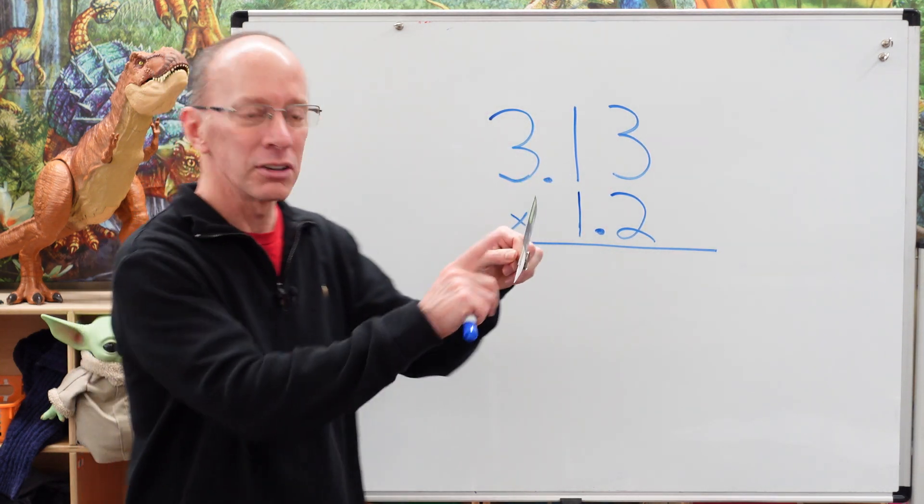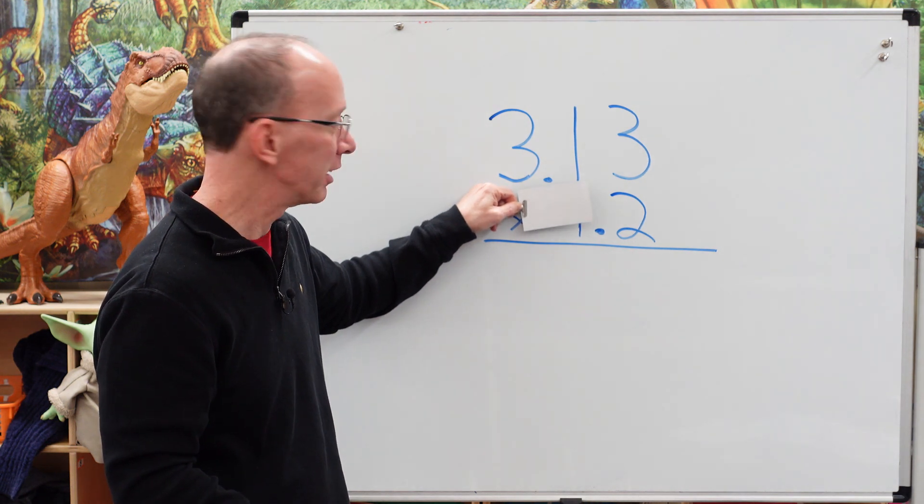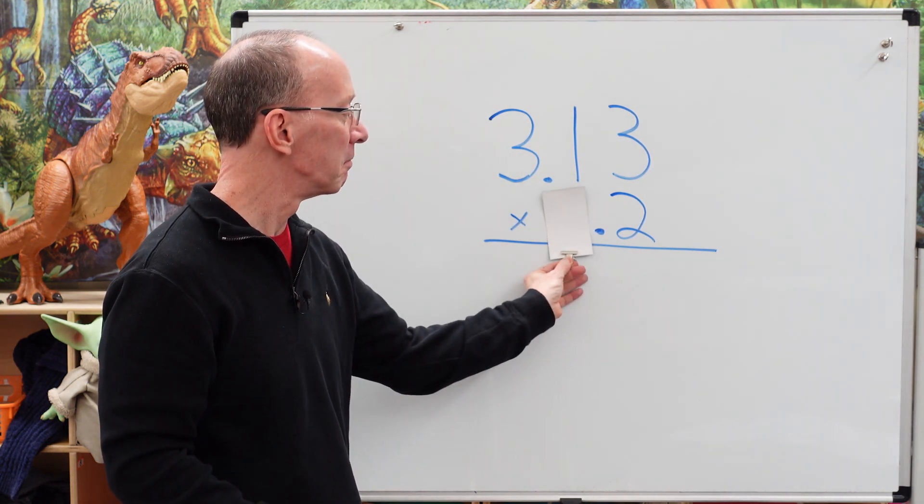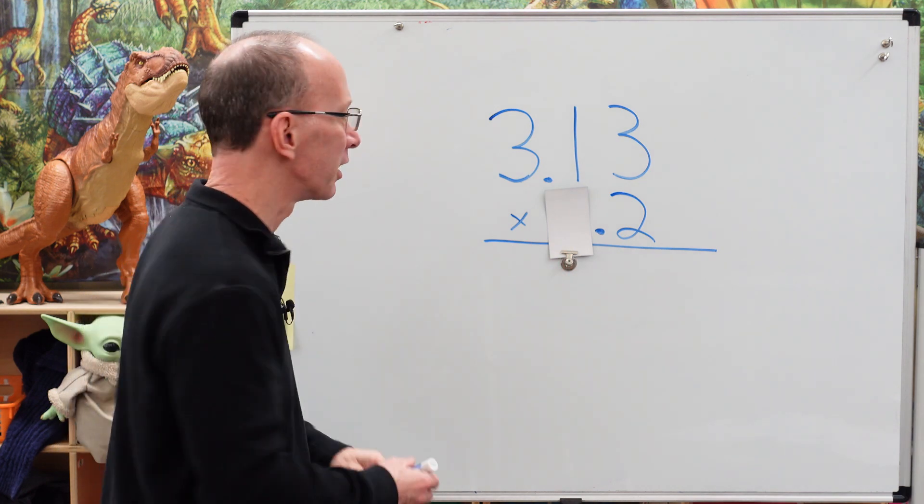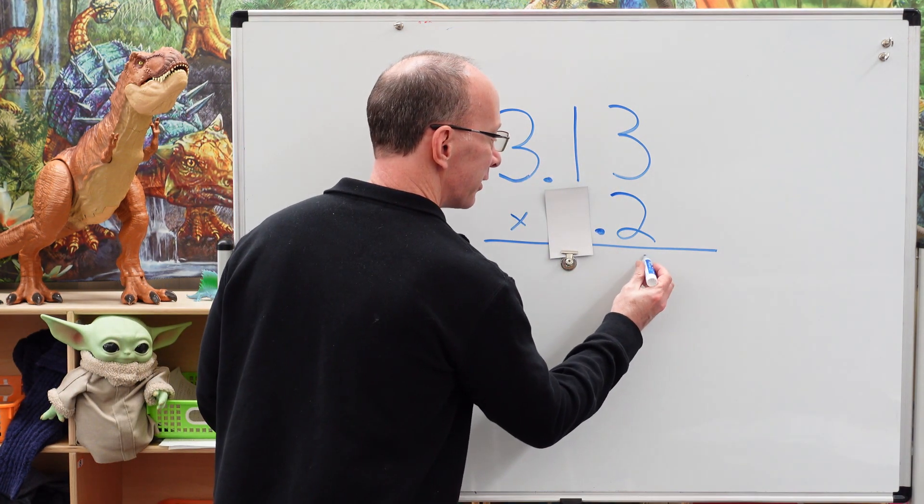So what I like to do is I use a little card to cover up this number and it makes it less scary. All right, so look at that. That number would be easy to multiply. So let's go ahead and start. 3 times 2? 6. Pick up sticks. All right.